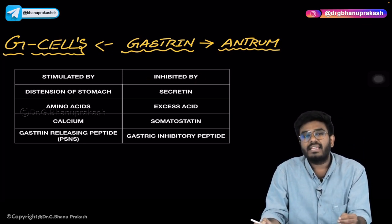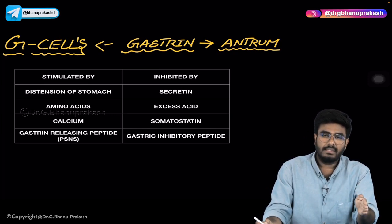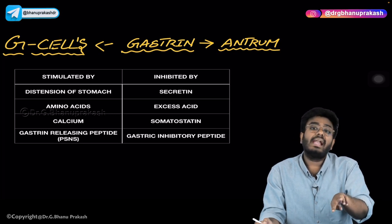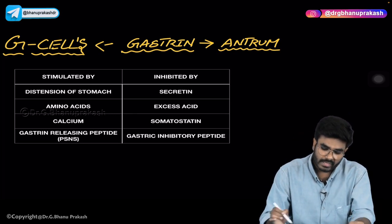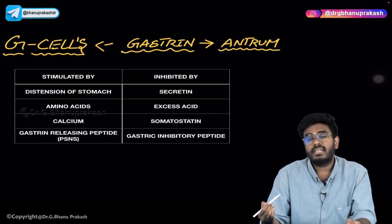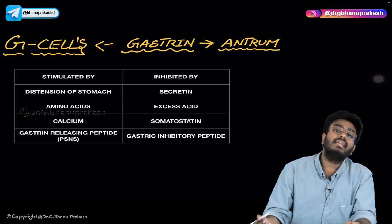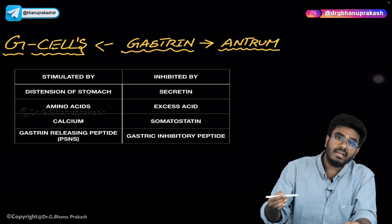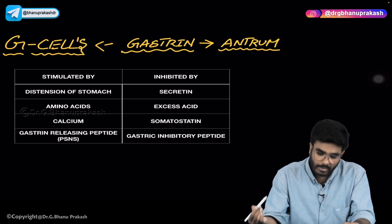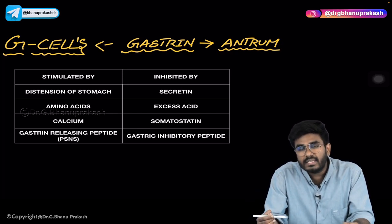Gastrin production is inhibited by secretin — which is nature's antacid — because secretin decreases the release of gastrin and thus decreases acid production. Excessive acid also inhibits further acid release through negative feedback.